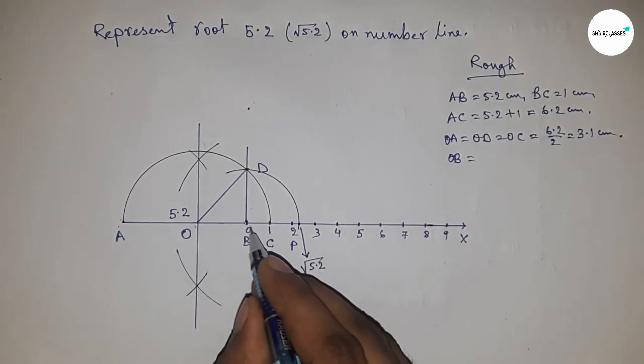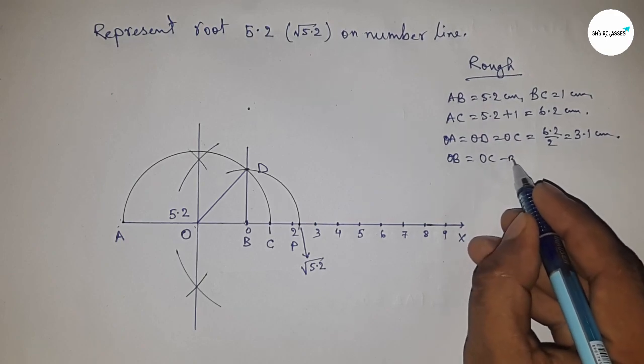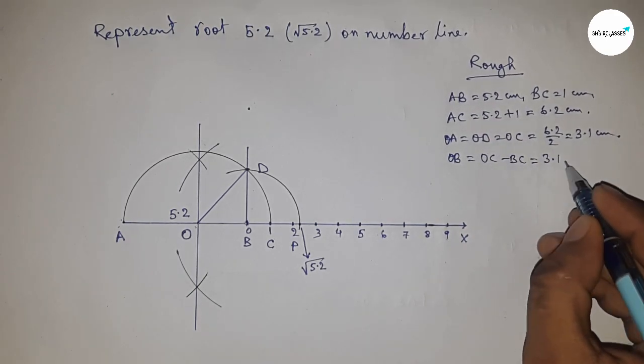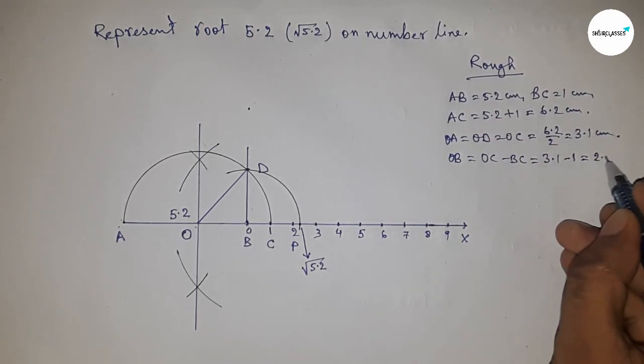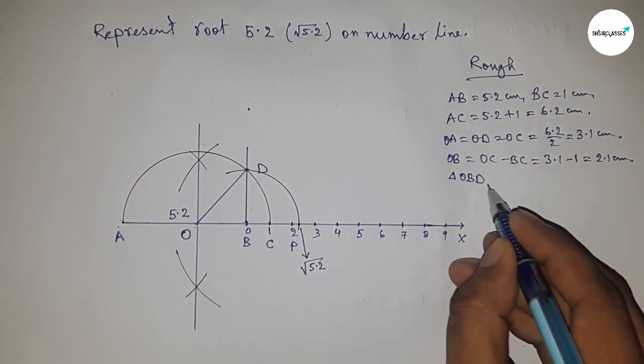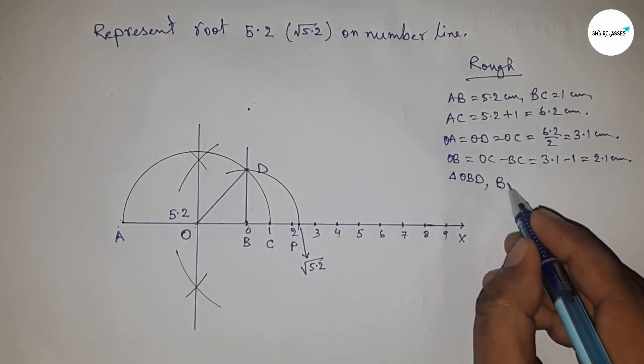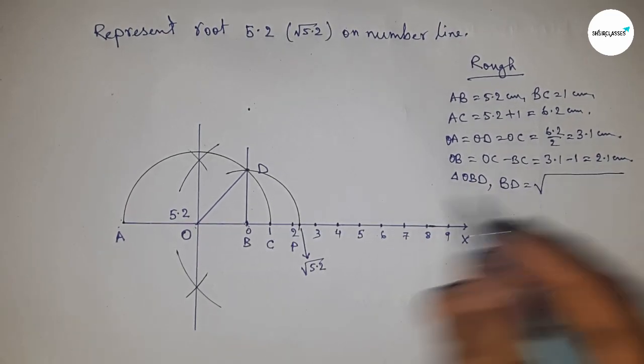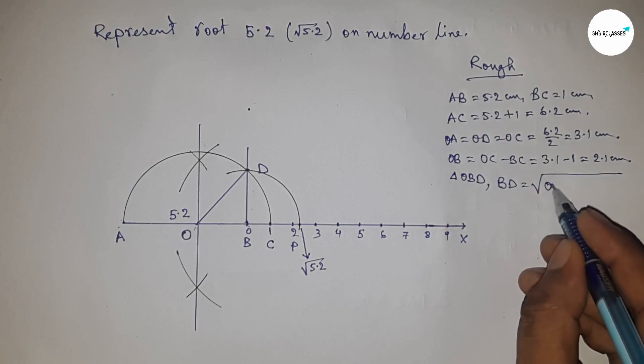From right triangle OBD, by the Pythagorean theorem: BD = √(OD² - OB²). Putting the values and applying the formula a² - b² = (a + b)(a - b).